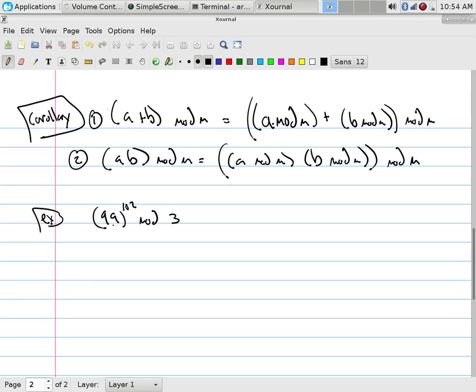Anyways, how can I do this? Well, what is it? It is actually 99 times 99 times 99, 102 times modulo 3, right? But what is 99 mod 3? Zero.